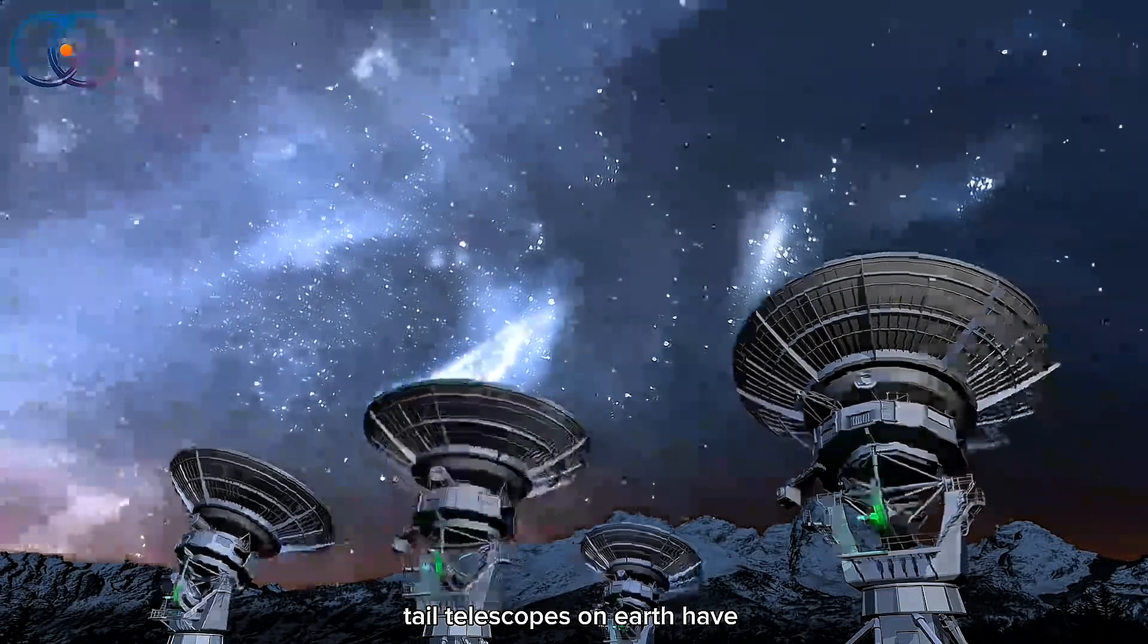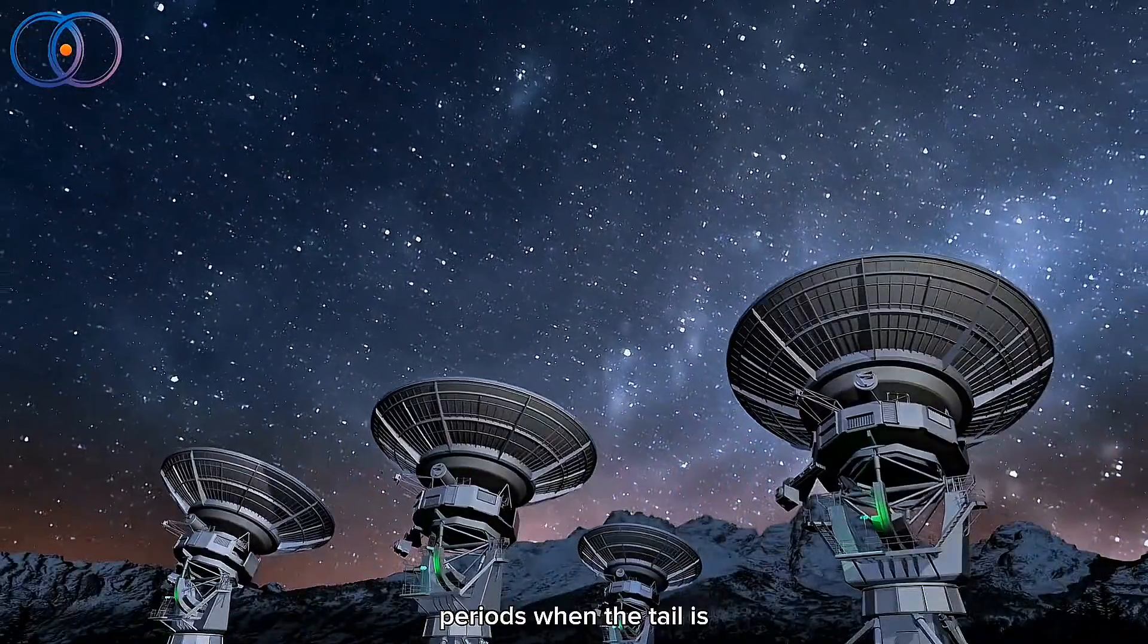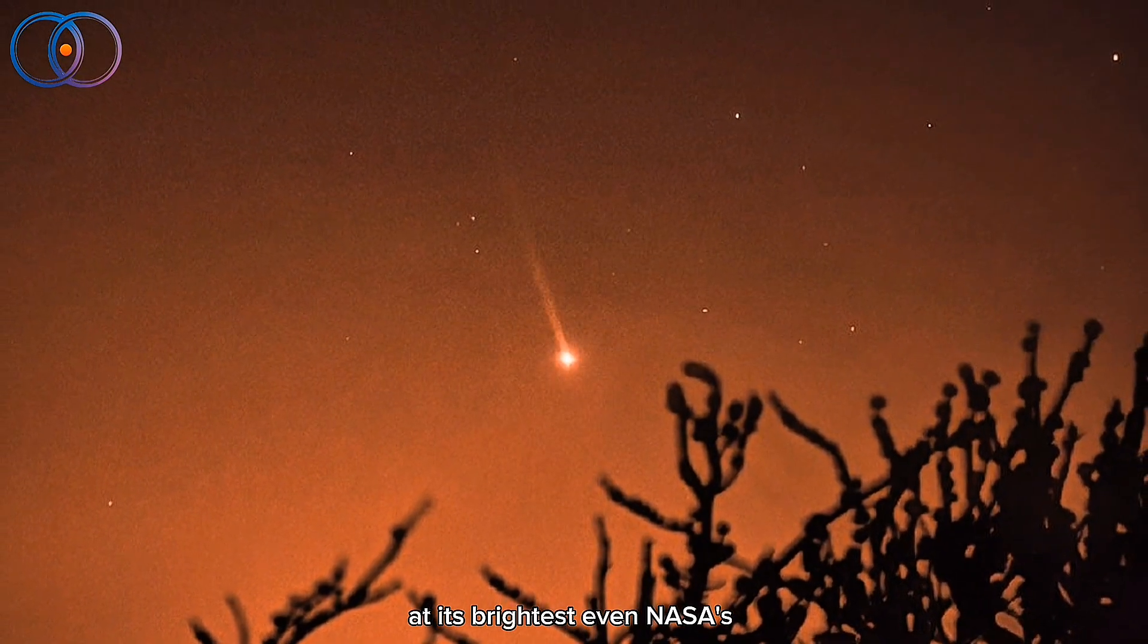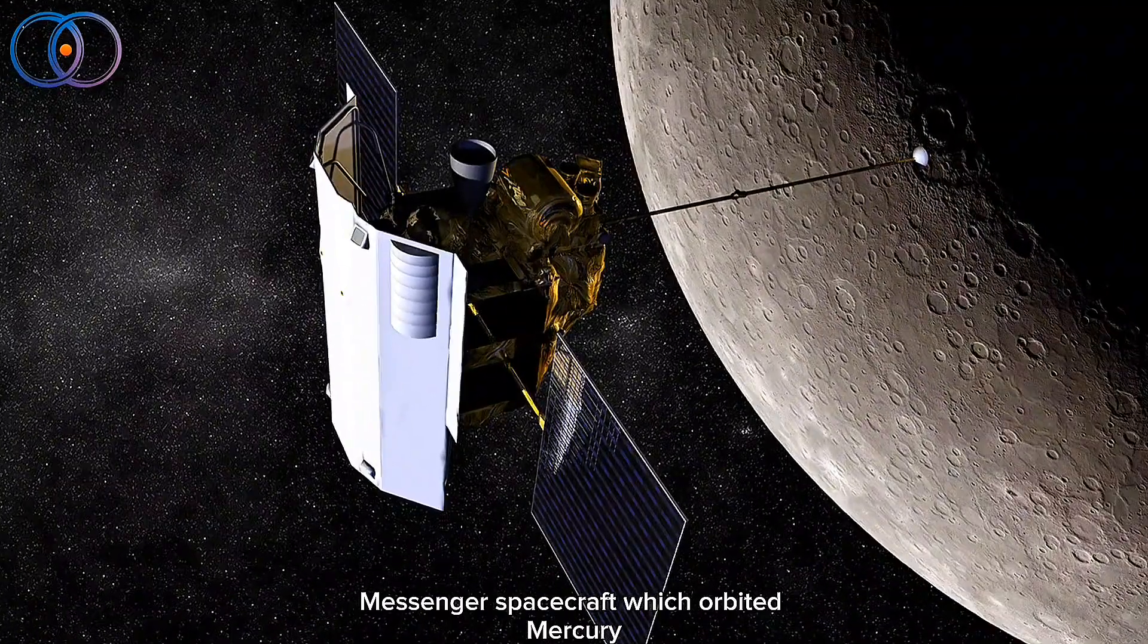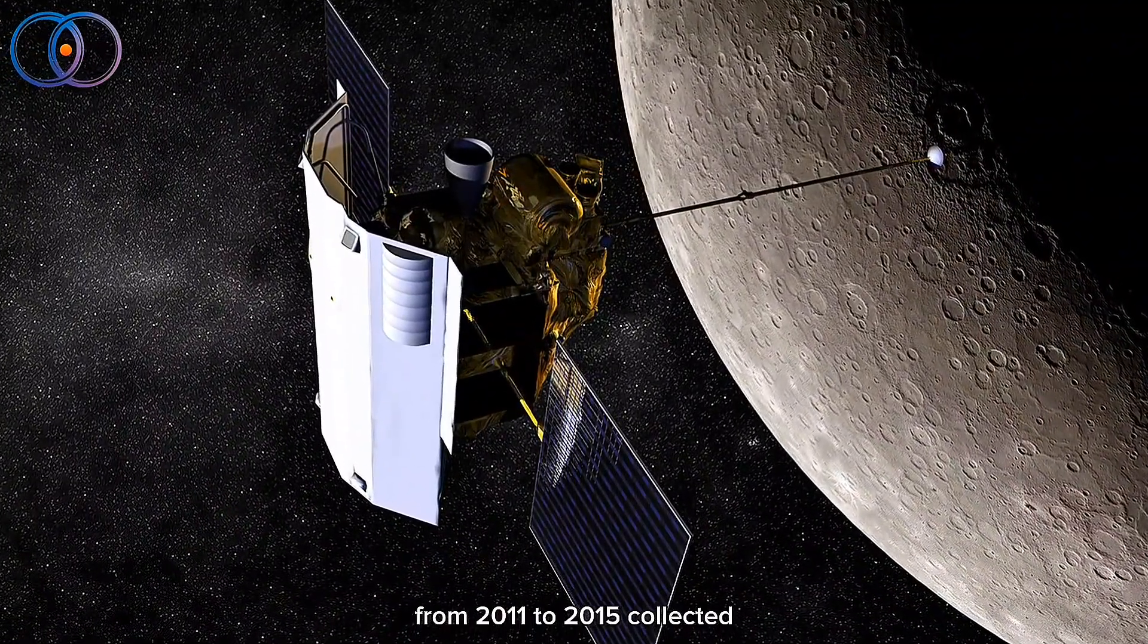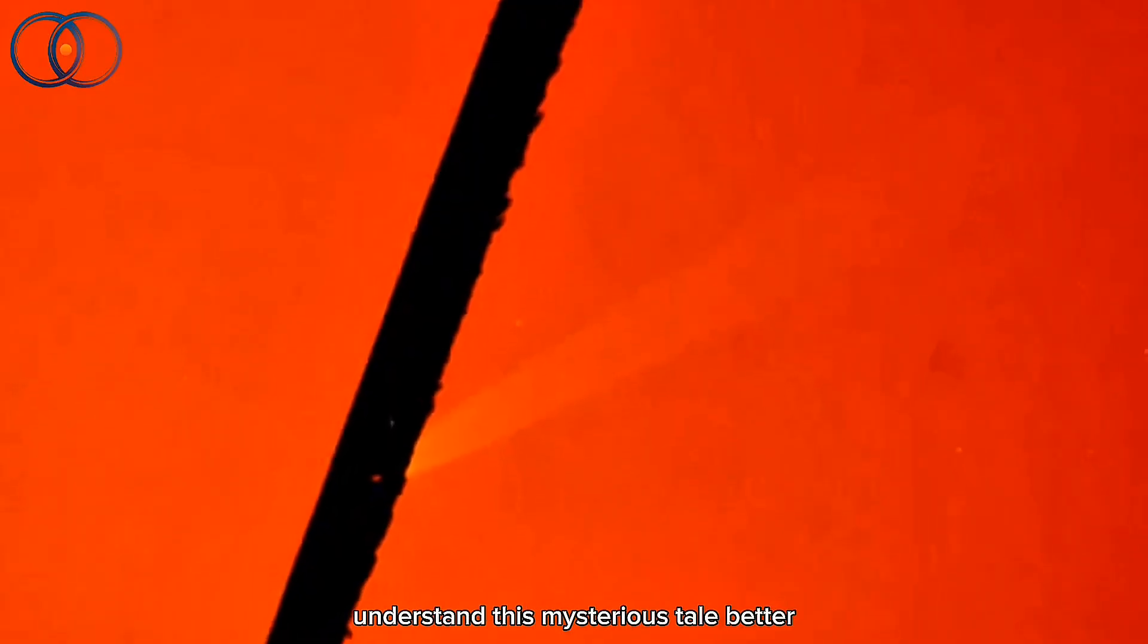Telescopes on Earth have captured incredible images of this phenomenon, especially during peak periods when the tail is at its brightest. Even NASA's MESSENGER spacecraft, which orbited Mercury from 2011 to 2015, collected tons of data on the planet's exosphere, helping scientists understand this mysterious tail better.